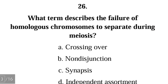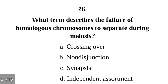Question 26: What term describes the failure of homologous chromosomes to separate during meiosis? A. crossing over, B. non-disjunction, C. synapsis, D. independent assortment. The correct answer is B, non-disjunction.